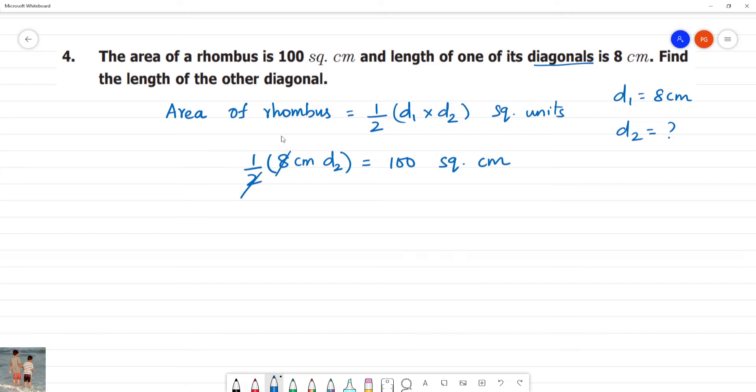If we cancel this, we will find 4. So 4 centimetre into diagonal 2 is equal to 100 square centimetre. Diagonal 2 is equal to 100 square centimetre.